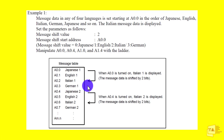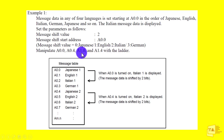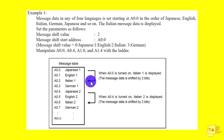This is how the message shift function works. You develop your message table, give the shift value and shift start address, and you can use multiple languages to display on your alarm screen so everyone can understand. You manipulate A0.0, A0.4, A1.0, and A1.4 with the ladder. Starting at A0.0: bits 0, 1, 2, 3 cover Japanese, English, Italian, German. Then A1.0 starts the next Japanese group — four for Japanese, four for English, four for Italian, four for German.